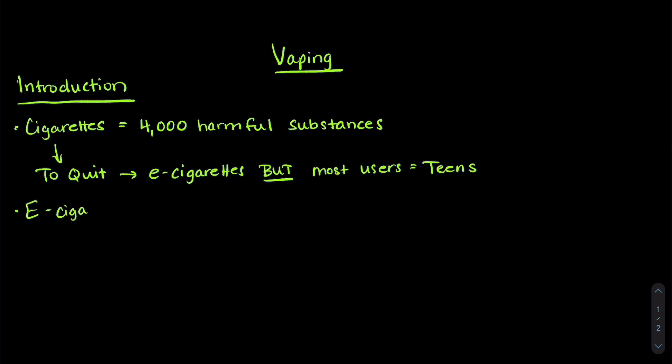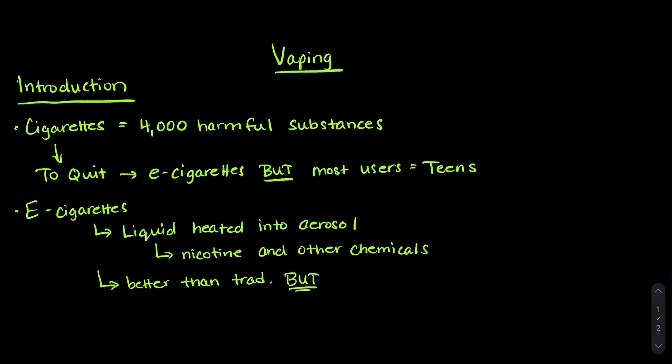So what are e-cigarettes? They have a liquid inside that's heated into an aerosol, and that liquid contains nicotine and other chemicals. It's better than traditional cigarettes, but those chemicals can still become carcinogens when they get heated up.